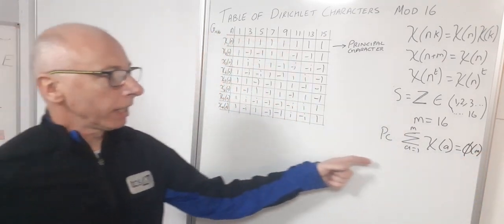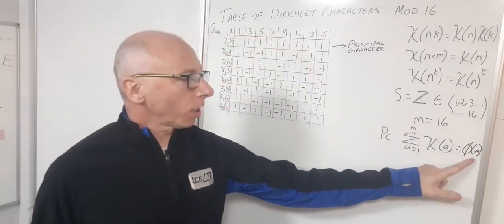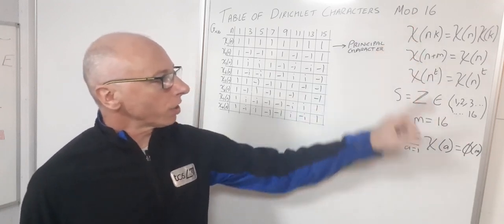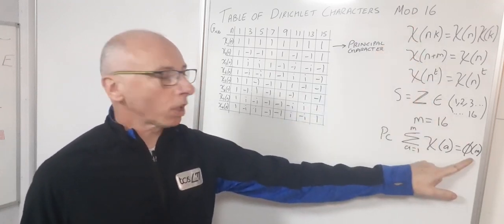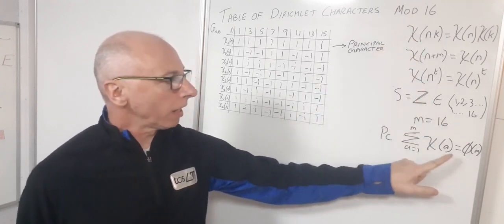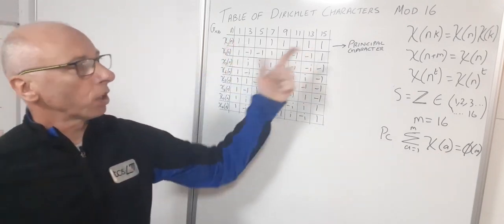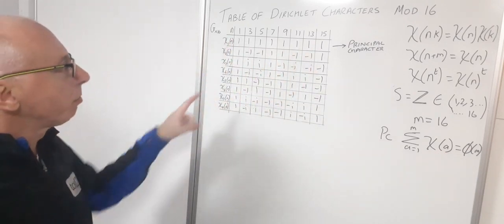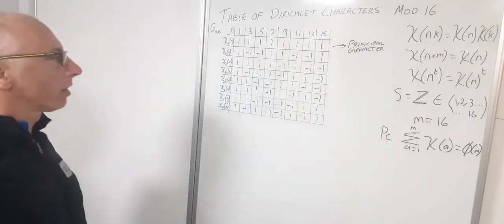That will be our values which are coprime to our modulus, so all the numbers that were coprime to 16. That will be our answer when we sum this up. If we sum all these up we'll get eight, and that's proof that this one is correct.